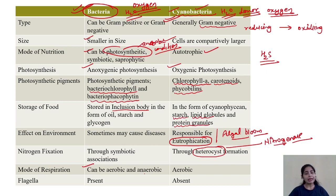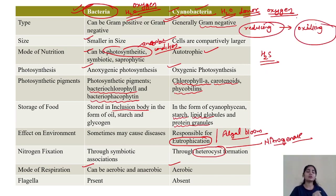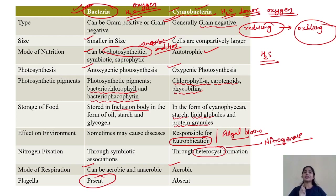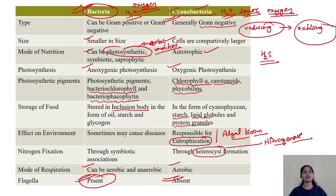Bacteria can be aerobic or anaerobic, but cyanobacteria are aerobic because they changed the reducing environmental conditions to oxidizing conditions by performing oxygenic photosynthesis. One major difference to remember is the presence of flagella: in cyanobacteria, flagella are absent, whereas in bacteria, flagella are present. These are the key differences between bacteria and cyanobacteria.